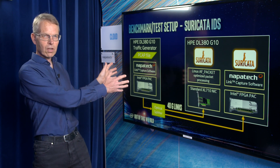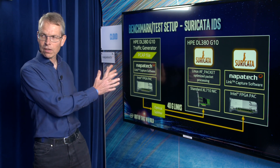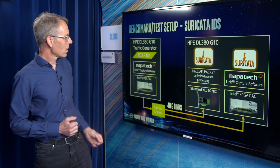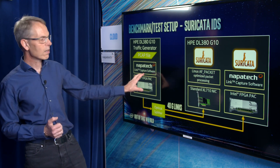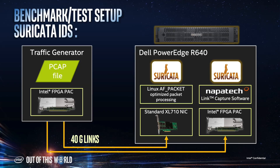On the other side we have the test generator. It's also built with an Intel FPGA PAC with the Napatech Link Capture software on top, because we also support line rate transmit to the network — that's also one of the benefits of the solution.